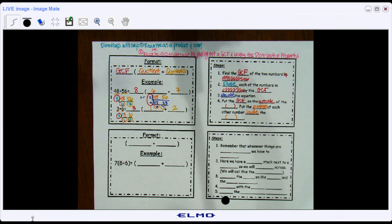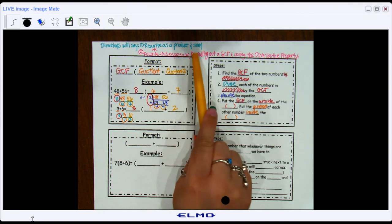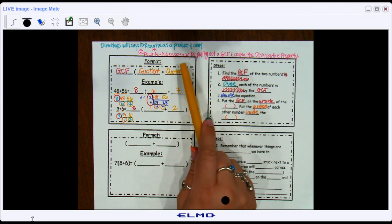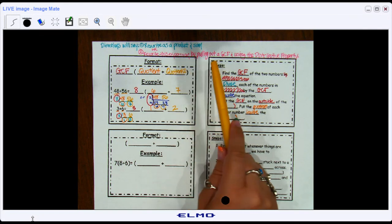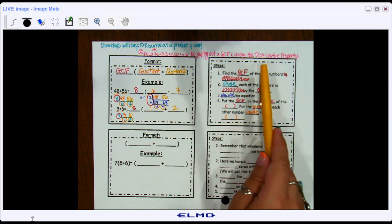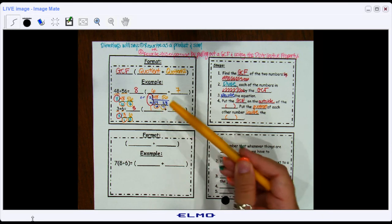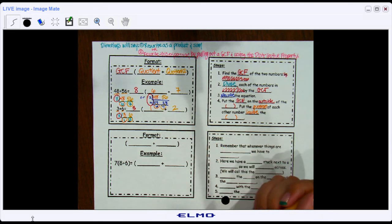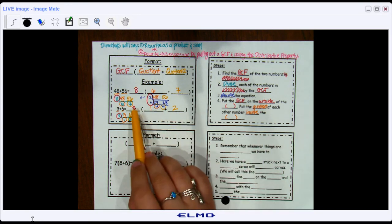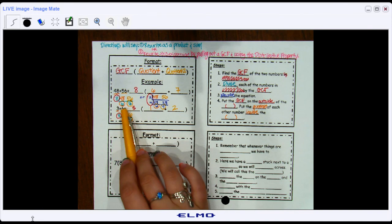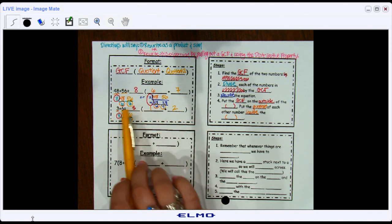Whenever it asks you to rewrite an expression as a product and a sum, or the complicated directions—rewrite this expression by pulling out a GCF and using the distributive property—that's all this is saying. And the distributive property is kind of what we did when we were checking ourselves. We were like, okay, 3 times 1 is 3, and 3 times 2 is 6. Yep, that equals what I started with. So I know that that's the right answer.